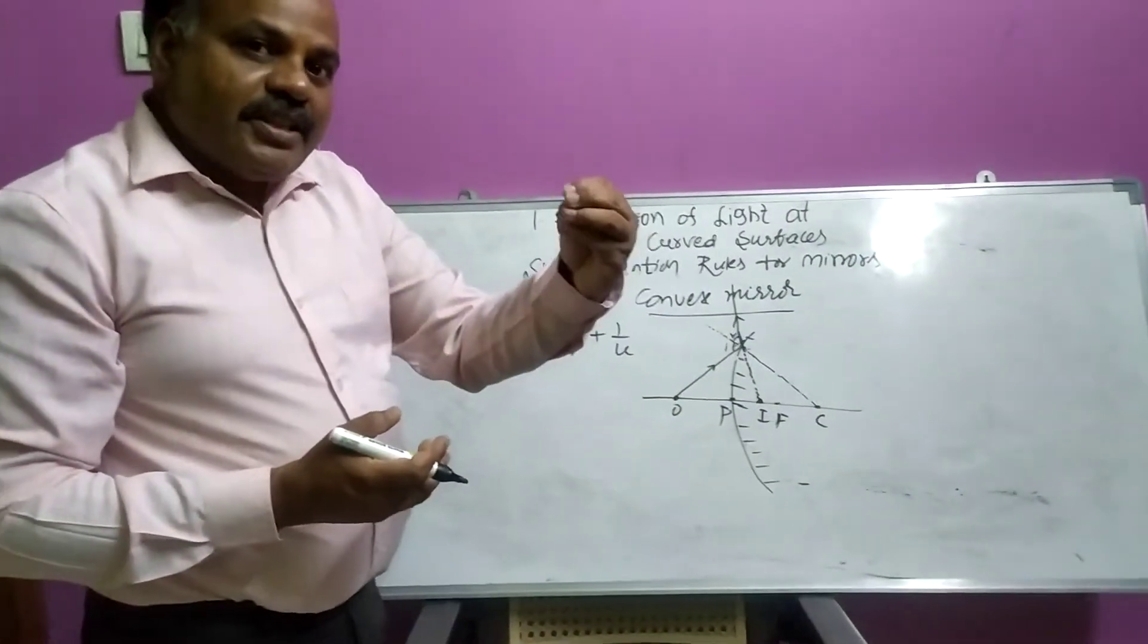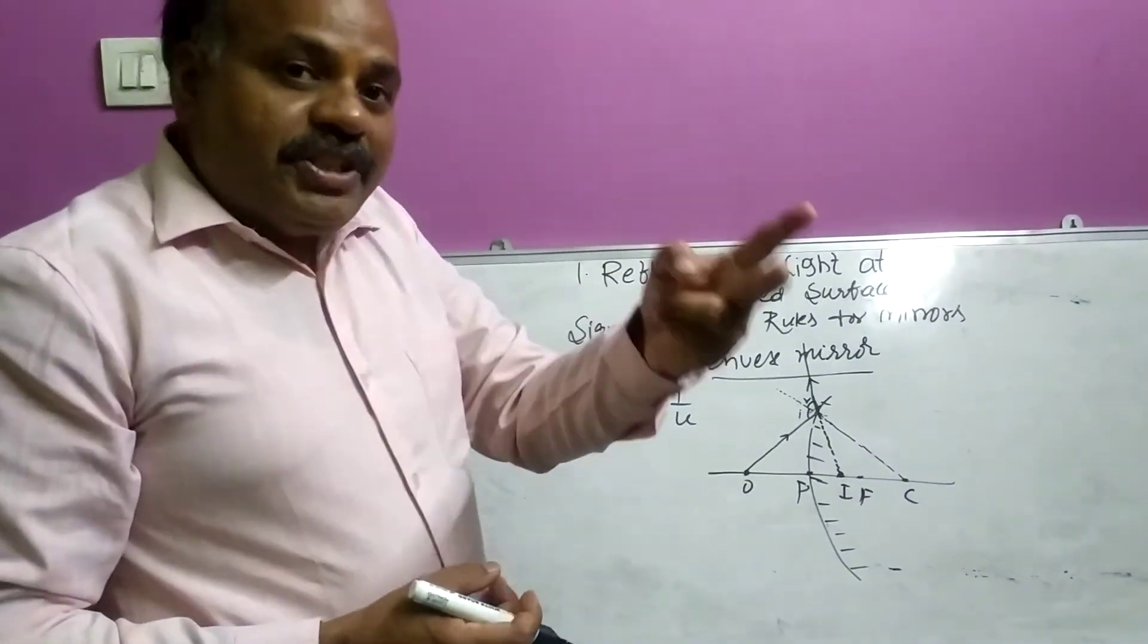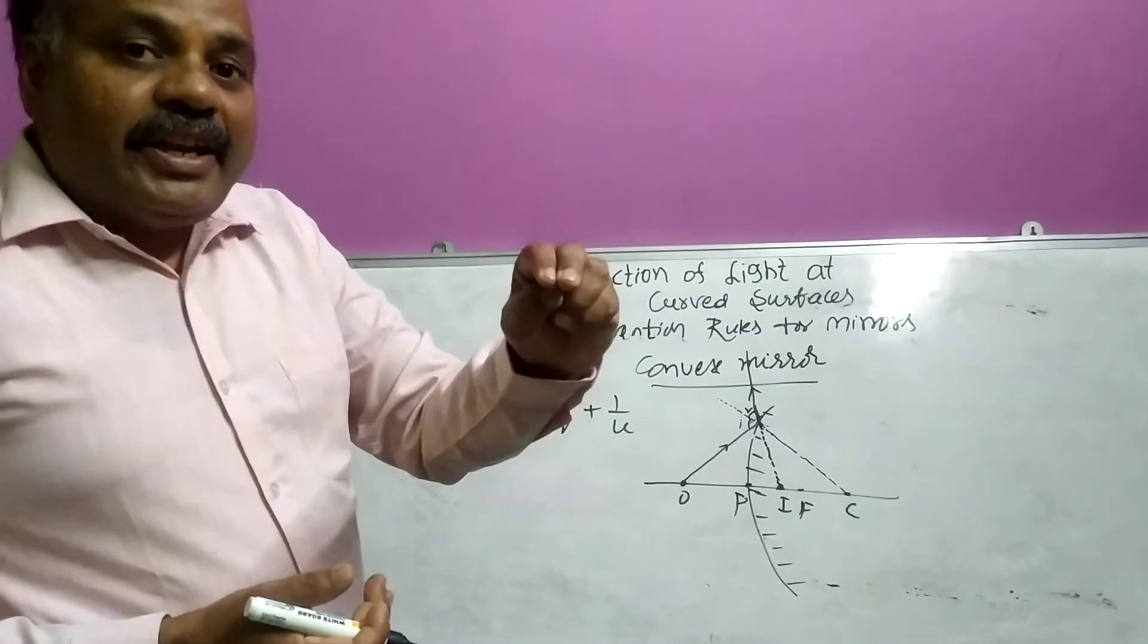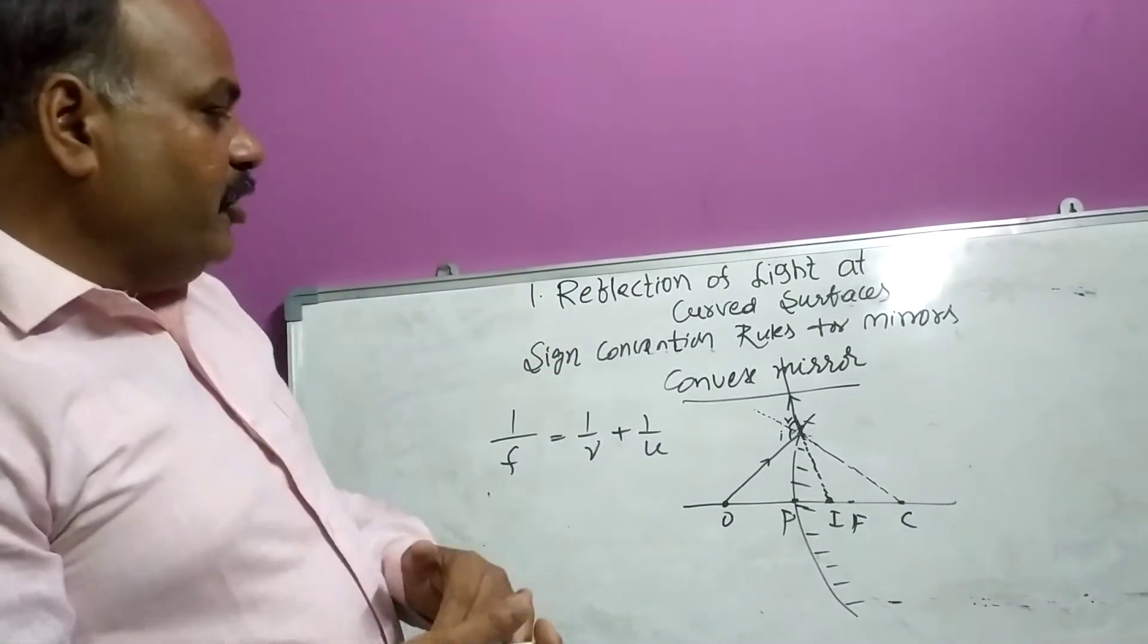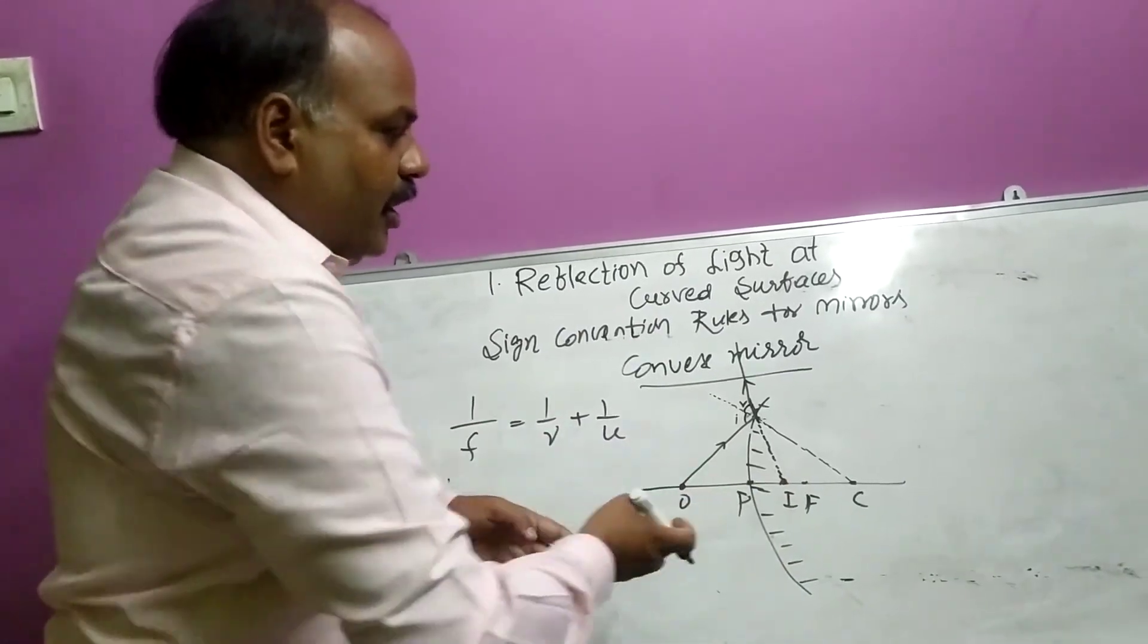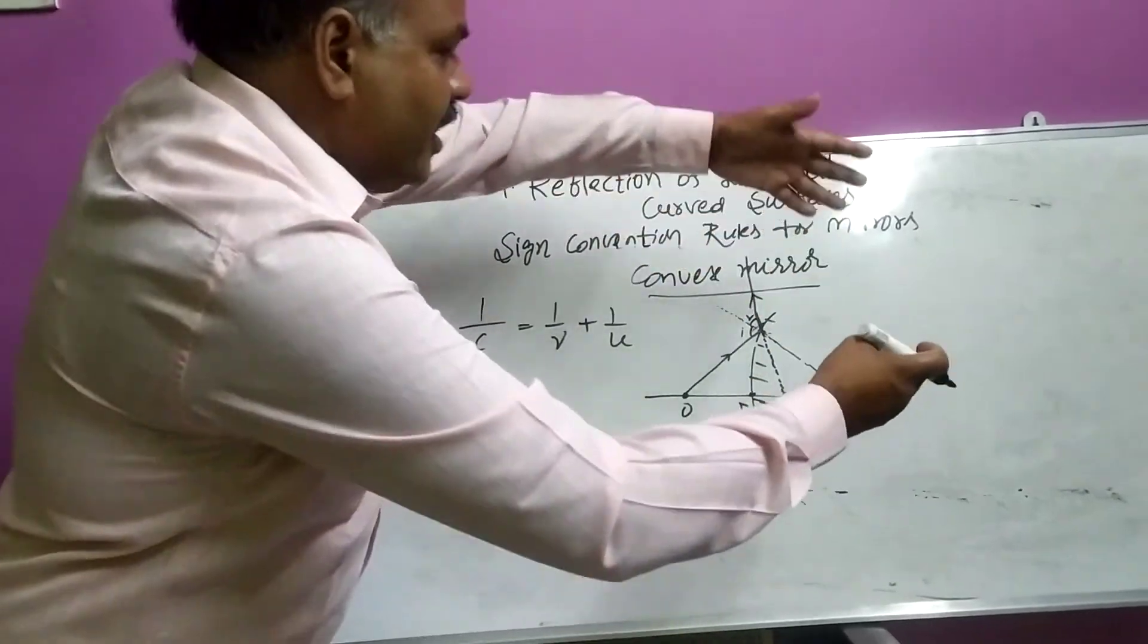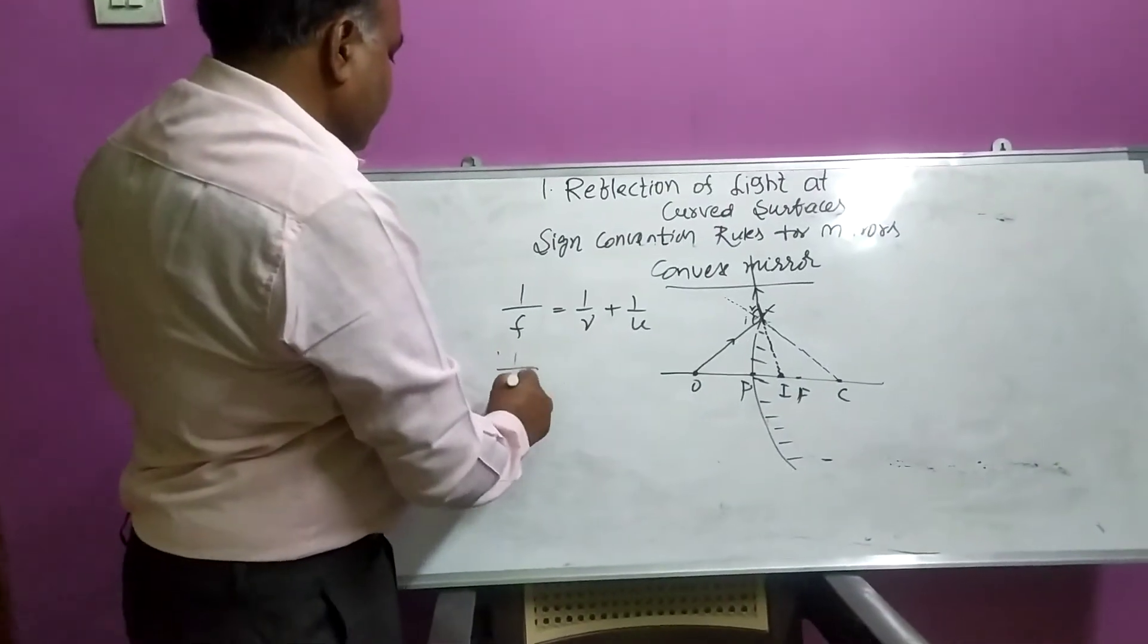If distance and direction of the incident ray, if they are in opposite direction, it will be taken as negative. So according to that, F means focal length. This is focal length. Focal length we are taking in this direction. Incident ray is also in this direction. Both are in this direction, so it will be taken as plus.